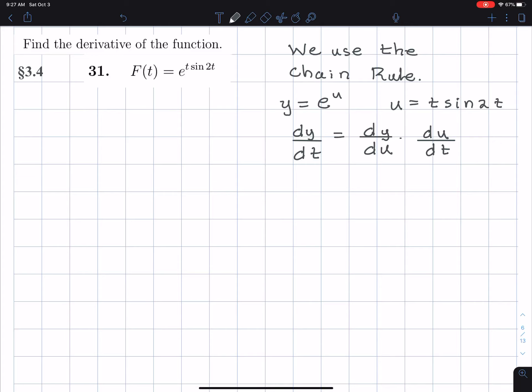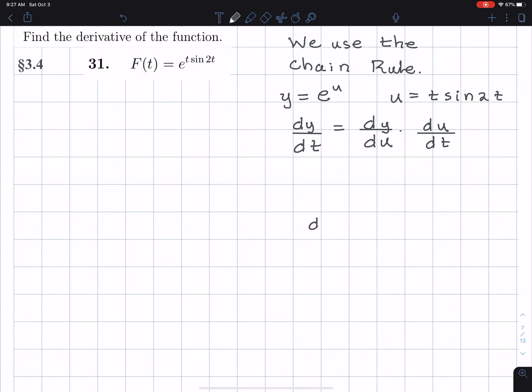That's going to cause us a little bit of thinking. And the reason is because du dt is going to be found by using the product rule. So here's d... Let me take this into pieces now. dy du is simply, I look above, the derivative of e to the u is e to the u. Now for dy dt, I'm going to have to look at this t sine t, and I'm going to use the product rule to solve that. I take the derivative of t and multiply by sine 2t.